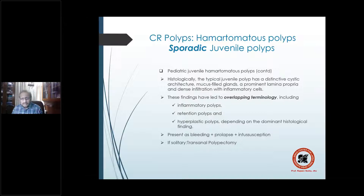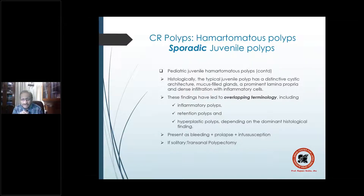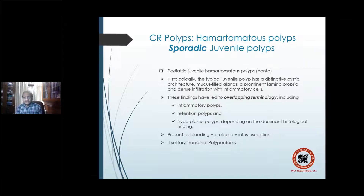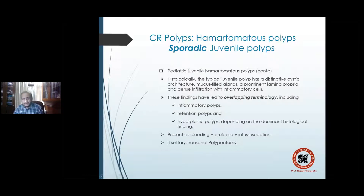Histologically, a typical juvenile polyp has both glandular and connective tissue elements, with distinctive cystic architecture, mucosal glands, a prominent lamina propria, and dense infiltration with inflammatory cells. Due to these overlapping findings, these polyps have also been named inflammatory, retention, or hyperplastic, depending on the dominant histological finding. But the primary terminology is sporadic juvenile hamartomatous polyp.